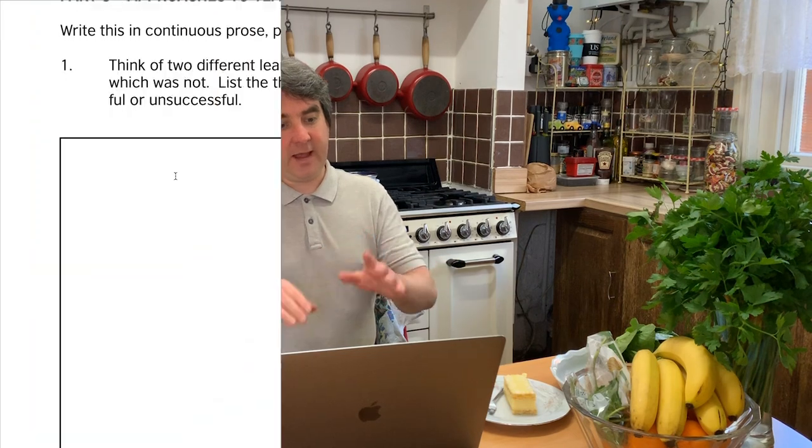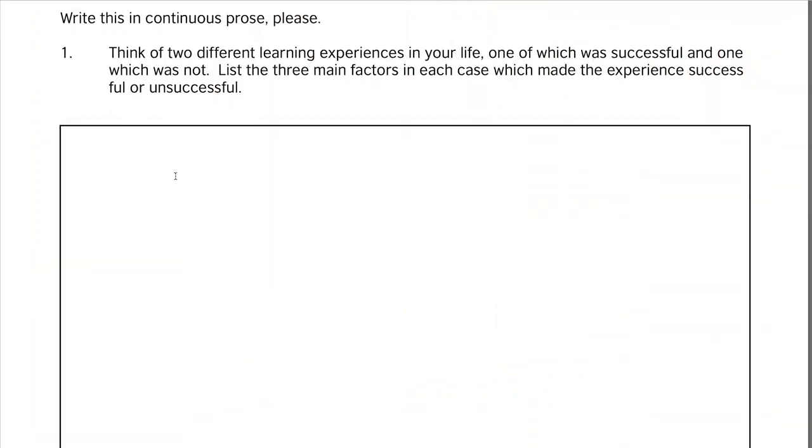If you're unsure about pronunciation — whether a word is a noun or verb form — check the dictionary and it will indicate where the stress is. That brings us to part three: approaches to teaching and learning. Here you need to write in continuous prose about two different learning experiences — one successful and one unsuccessful — listing three main factors in each case.